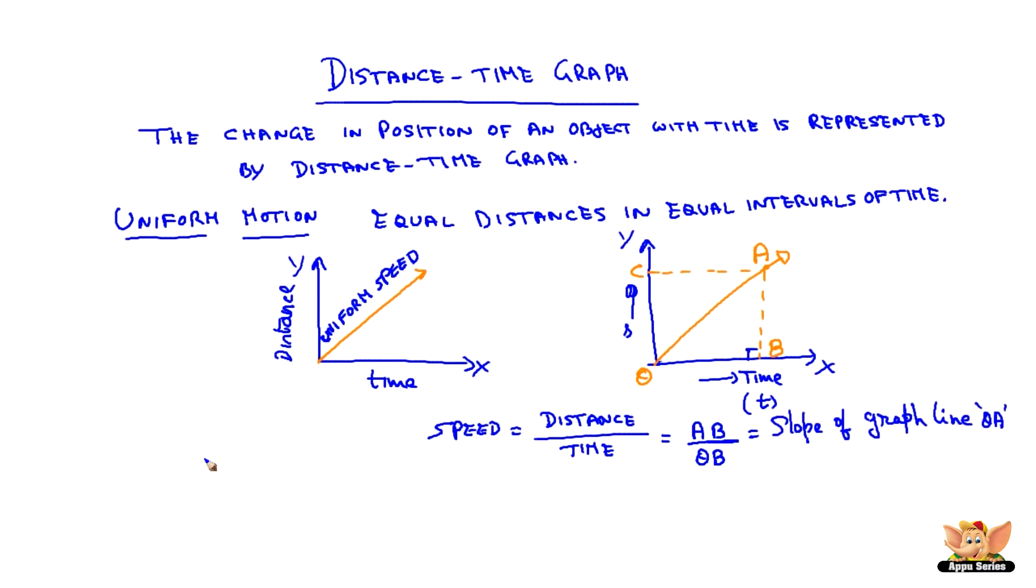Hence, we can conclude that the slope of the distance-time graph is the speed of an object.